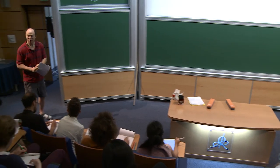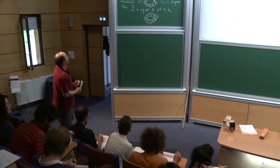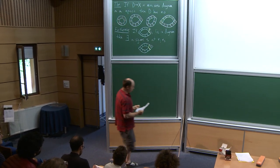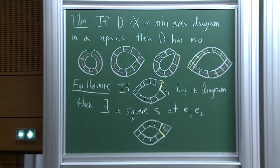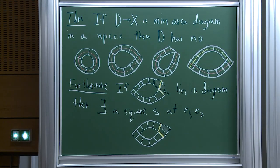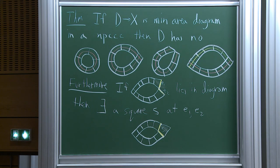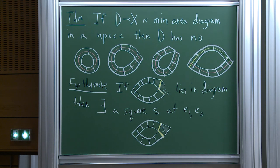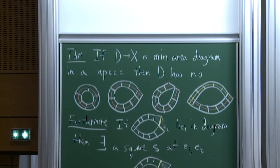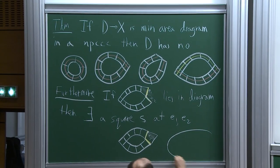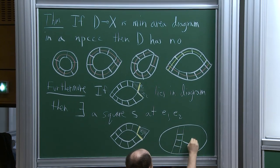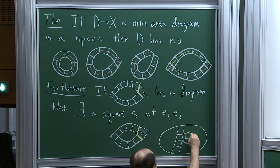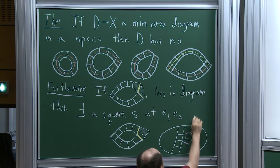That's where we ended last time. We were looking at a minimal area disk diagram D in X. Remember that meant we have a diagram built from squares — there are a lot of squares inside. I'll draw part of a diagram to remind you what's going on.